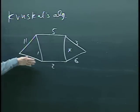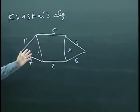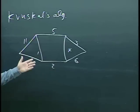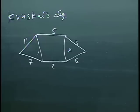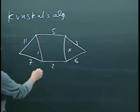Kruskal's algorithm sorts the edge weights and then includes edges in the order of their edge weight, smallest first, unless the inclusion of that new edge being considered would cause a cycle with the edges that are already selected. I know I wrote this down last time and I don't want to write it again, but let me just set it.